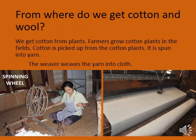Now, let's look at where we get cotton and wool. Take out your social studies book and open page number 16. We get cotton from cotton plants. Farmers grow cotton plants in the fields. Cotton is picked from the cotton plants and it is spun into yarn. The weaver weaves the yarn into cloth. Yarn means thread.